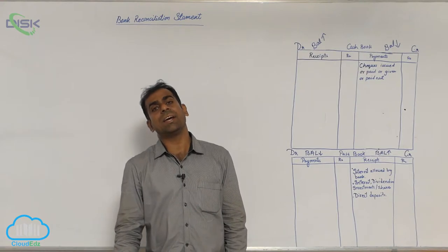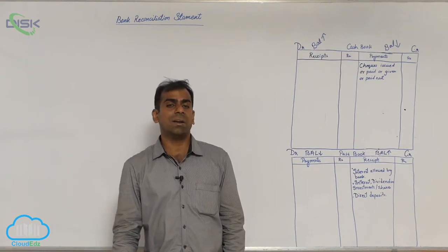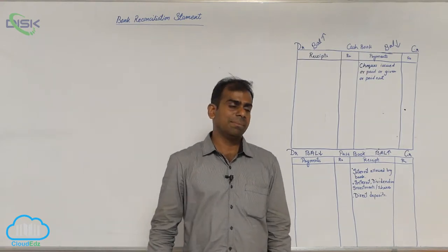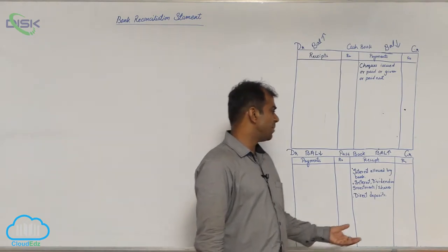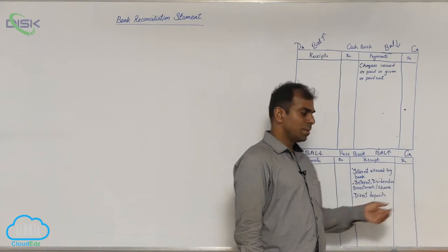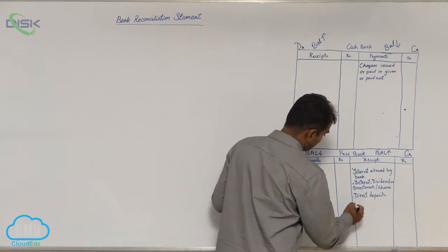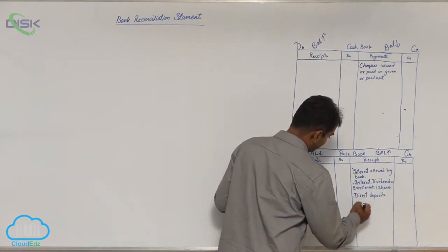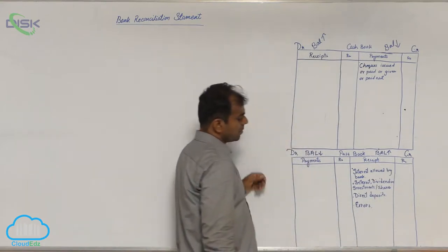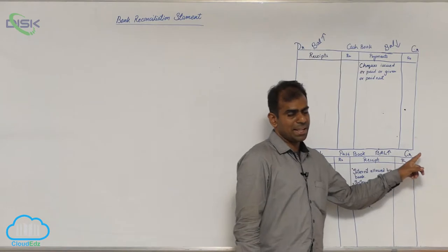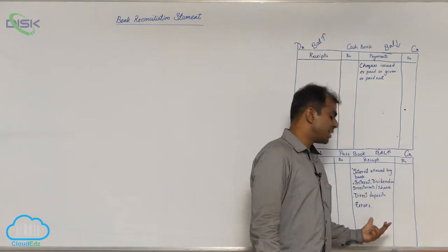Wrong entry on the credit side of passbook means bank by mistake has entered some amount on the credit side. So because it entered on the credit side, we are writing the error.